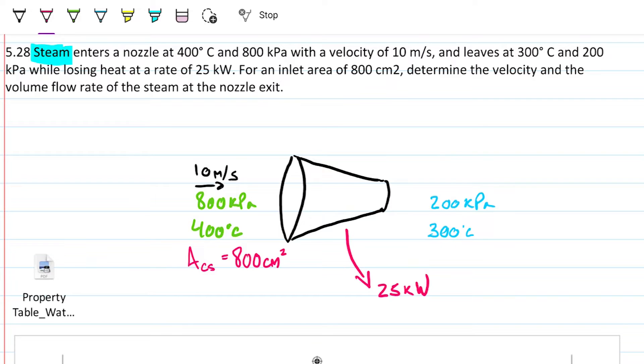We have a heat loss of 25 kilowatts, and this is super relevant. So what are we looking for? We're looking for the velocity here at the exit and also the volumetric flow rate. I'm looking for an answer in meters per second and an answer in meters cubed per second.